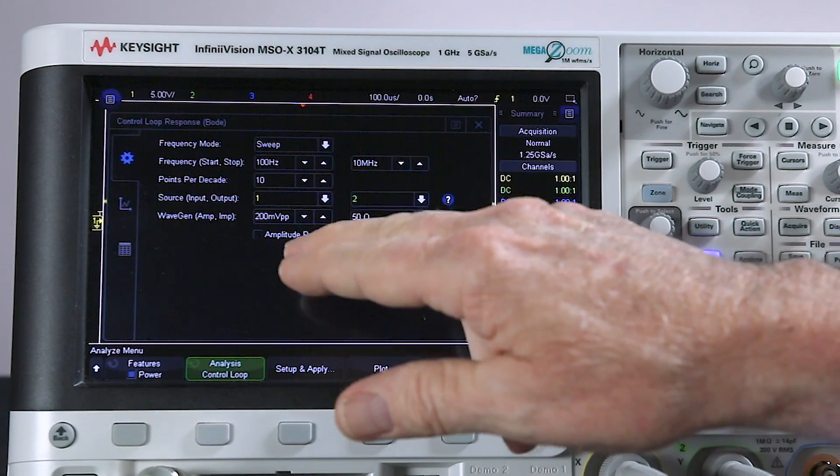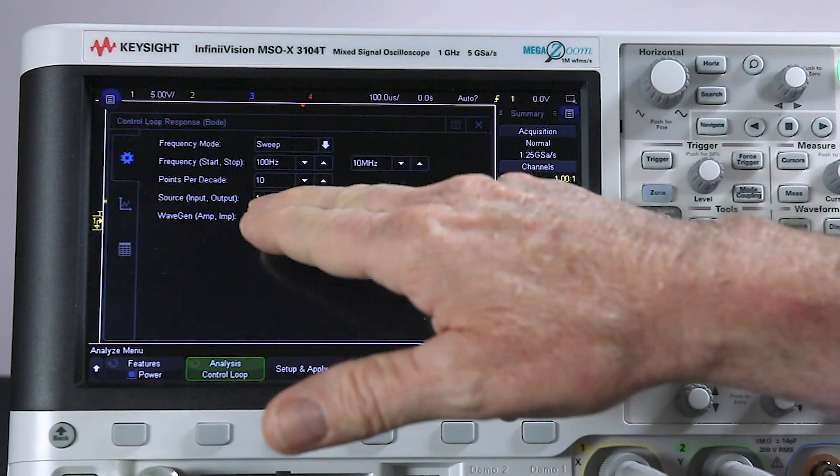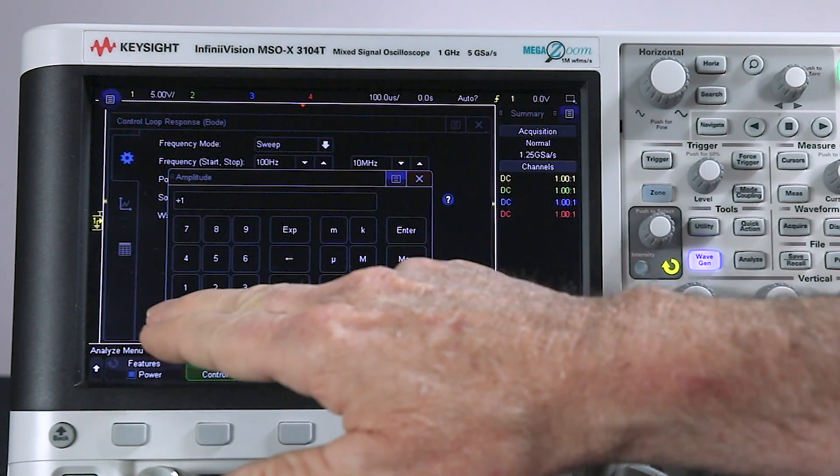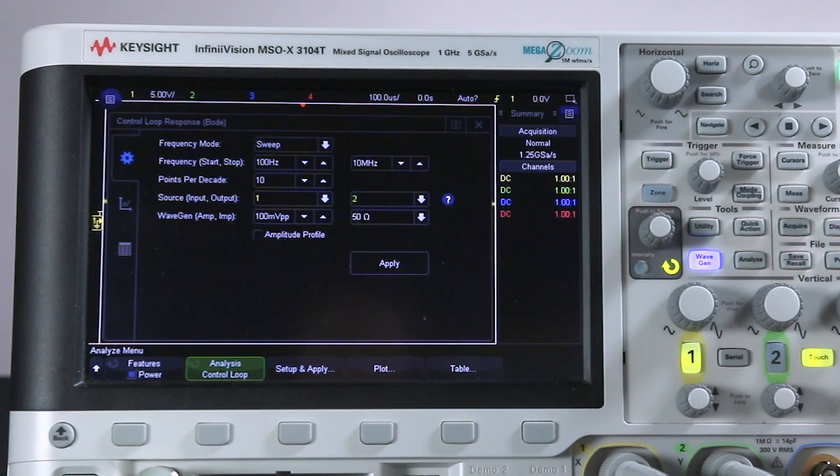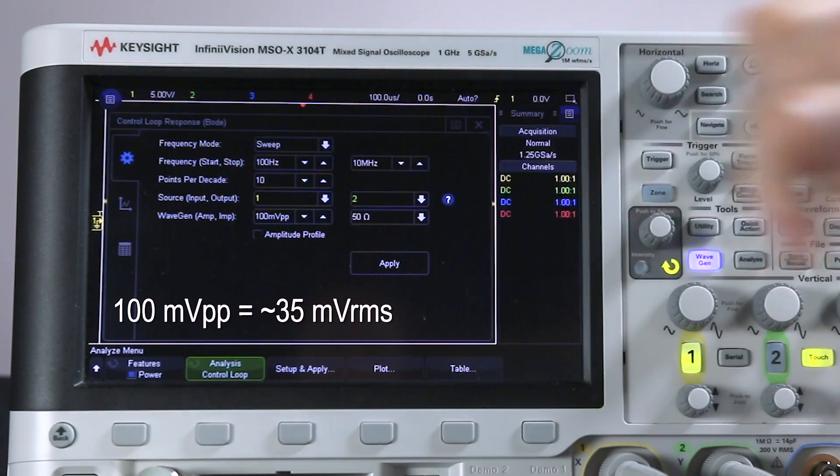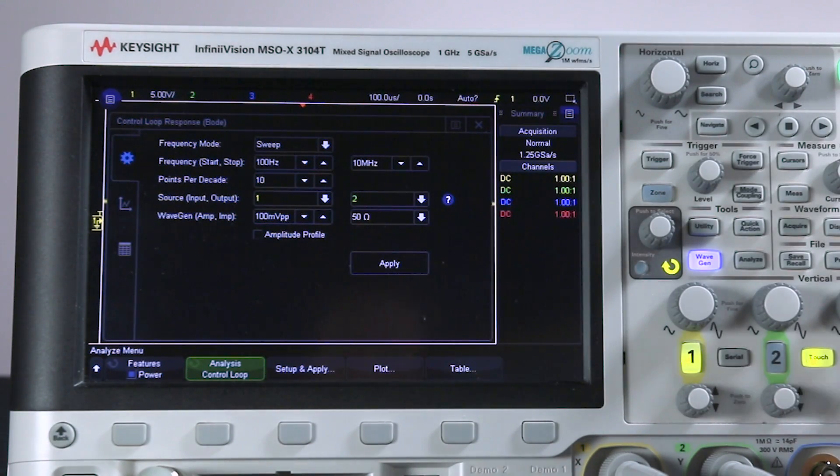And then the most critical setup is your test amplitude. The default is 200 millivolts. Most frequency response analyzers specify it in either dBm or RMS. I'm going to set this to 100 millivolts. We're going to start with a low-level signal. We're going to do the test a couple of times. So this is equivalent to about 35 millivolts into 50 ohms. So everything is set up. We just press apply.